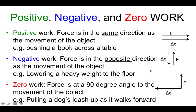For zero work, the force is at a 90-degree angle to the movement of the object. For example, if you pulled a dog's leash up as you are actually walking the dog forward, then you're doing zero work.